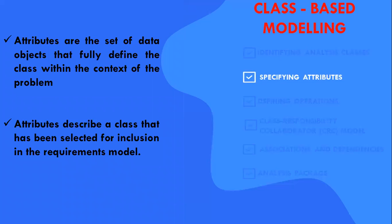Coming to specifying attributes, attributes are the set of data objects that fully define the classes within the context of a problem. The attributes describe a class that has been selected for inclusion in the requirement model. In essence, it is the attributes that define the classes. They clarify what is meant by the class in the context of the problem space. To develop a meaningful set of attributes for an analysis class, we must study each use case and select those things that are responsible and which belong to the class.